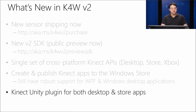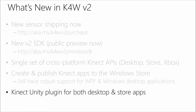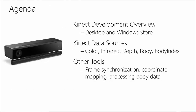For the first time, we have support for Unity for Kinect, using the same APIs for both Desktop and Store applications. Today we'll cover three major pieces: an overview of Kinect development including the sensor and what it's like to write desktop and Windows Store apps; then more detail on the Kinect data sources — the different types of data, formats, and how to use them; and finally, other tools the Kinect SDK provides to use this data in new and innovative ways.